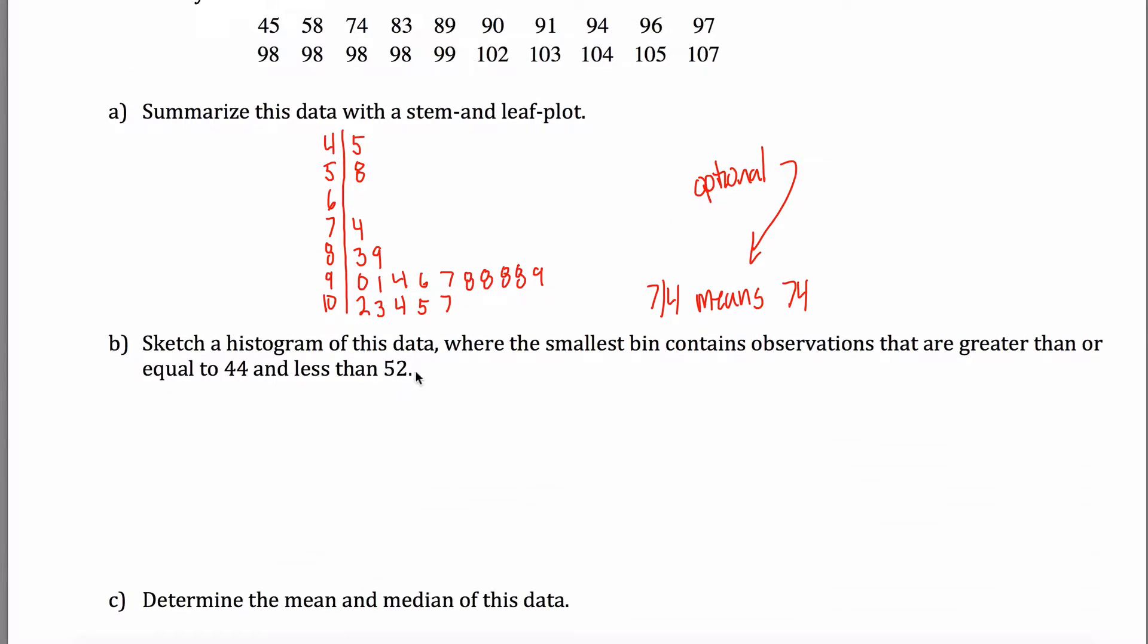Part B, sketch a histogram of this data where the smallest bin contains the observations that are greater than or equal to 44 and less than 52. Okay, so you can either do this by hand or using your calculator. I'd recommend you use your calculator. I'm going to have my smallest bin go from 44 up to 52. So what that tells me is that my minimum in my calculator will be 44 and that my bin size will be 8, the distance between these two numbers.